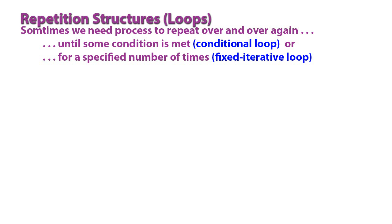Other times we want a process to repeat a certain number of times. And that would be a fixed iterative loop. We know how many times that process should repeat. We want to do something 10 times, or 1,000 times, or 20 times. And so there are different types of loop structures.